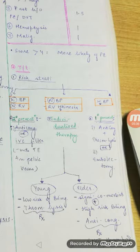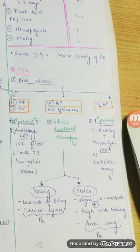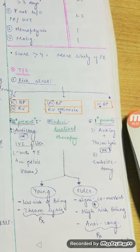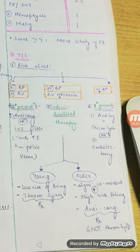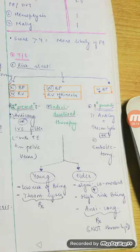If BP is normal but there are signs of right ventricular hypokinesis — indicating significant RV strain — we go for individualized therapy. In a younger patient with low risk of bleeding, we can go for thrombolytics. In an elderly patient with significant comorbidities or high bleeding risk, we give anticoagulants and not thrombolytics.